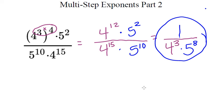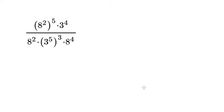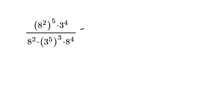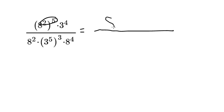Let's move on to the next one. Go ahead and write this question down before we do anything else — pause the video and write the question down. Now that you've done that, the first thing we're going to do is look at what we have. Here we have 8 squared raised to the power of 5, so we have power-to-a-power in the numerator, and we also have power-to-a-power in the denominator. So I'm first going to start by evaluating those power-to-a-powers. In the numerator, I really have 8 to the power of 2 times 5.